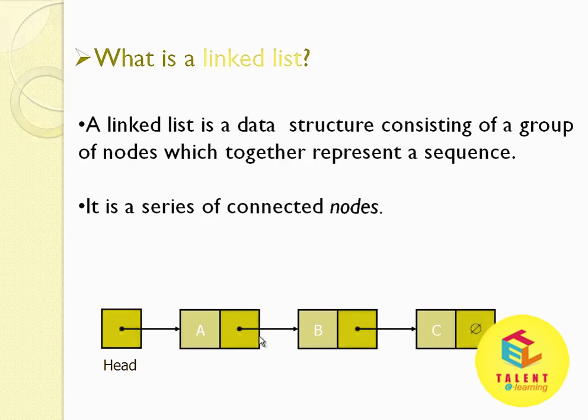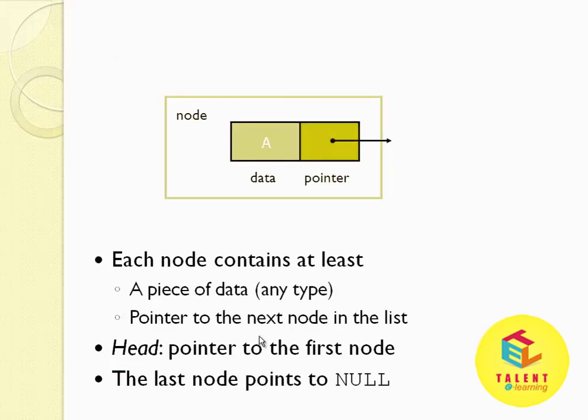Now, what is a linked list? A linked list is a data structure consisting of a group of nodes which together represent a sequence. It is a series of connected nodes. Each node contains at least a piece of data and a pointer to the next node in the list. There is a pointer to the first node called head, and the last node points to null. The above diagram shows the logical representation of a node of a singly linked list.